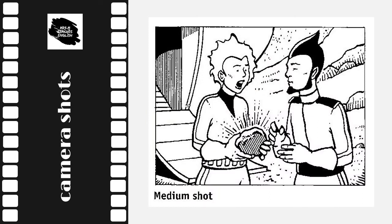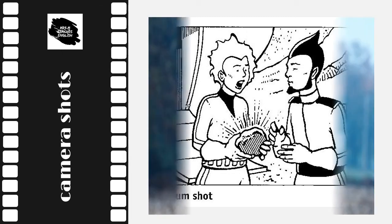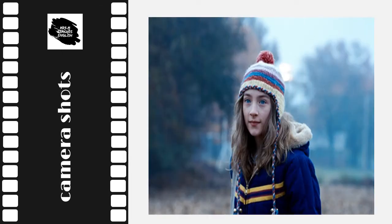In a medium shot, there's less background and the figures in the frame are only seen from the waist up. This too can be called a two shot or a three shot, depending on the number of figures. Here's a medium shot from the film The Lovely Bones. This shot is often used to focus audience attention on a particular character.